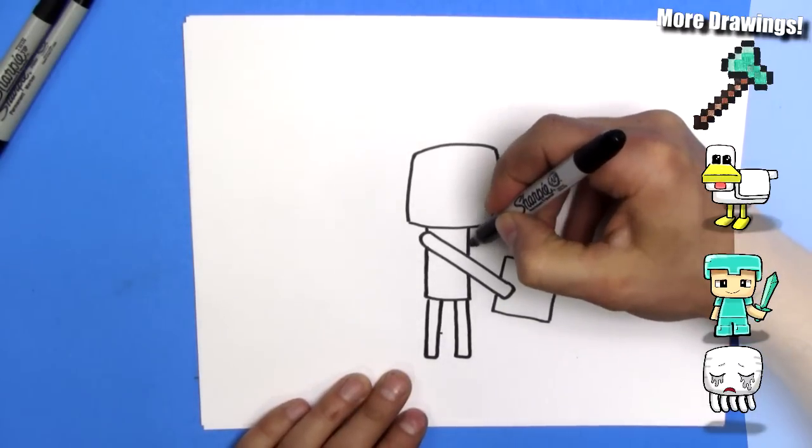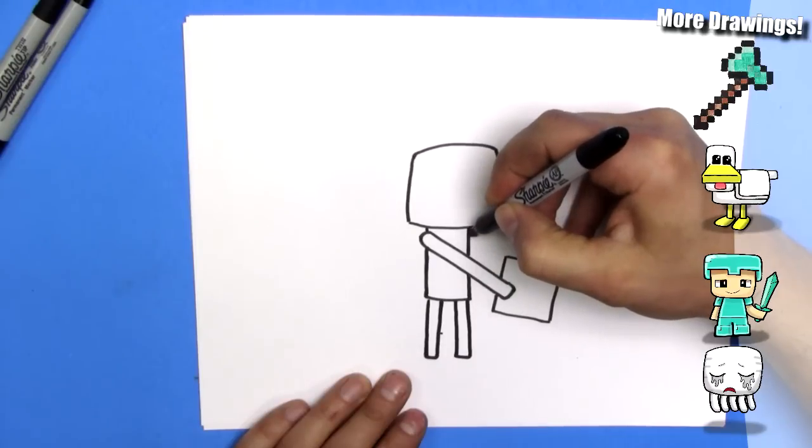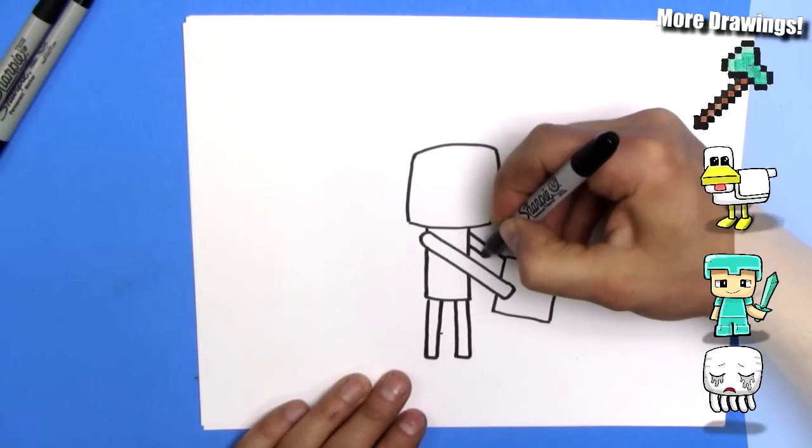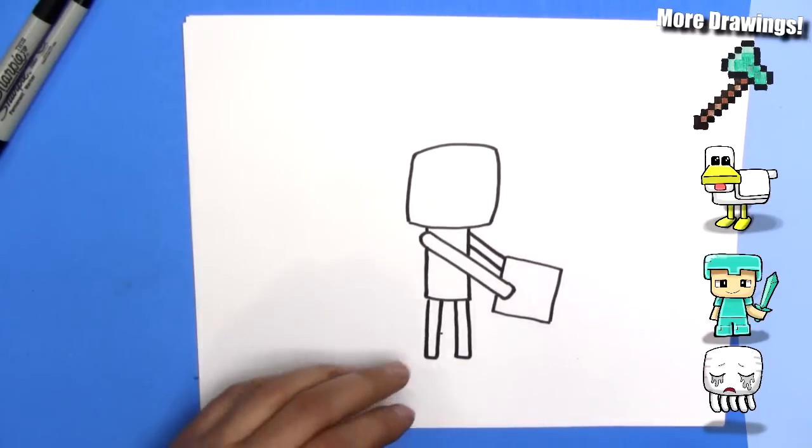And we're going to put the other arm holding it, and it'll come from the top of this box to the shoulder here. There we go. There's a skinny arm holding it.